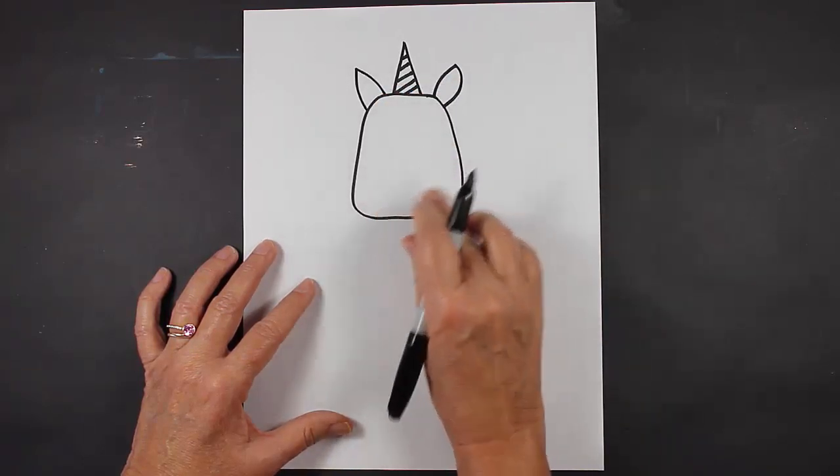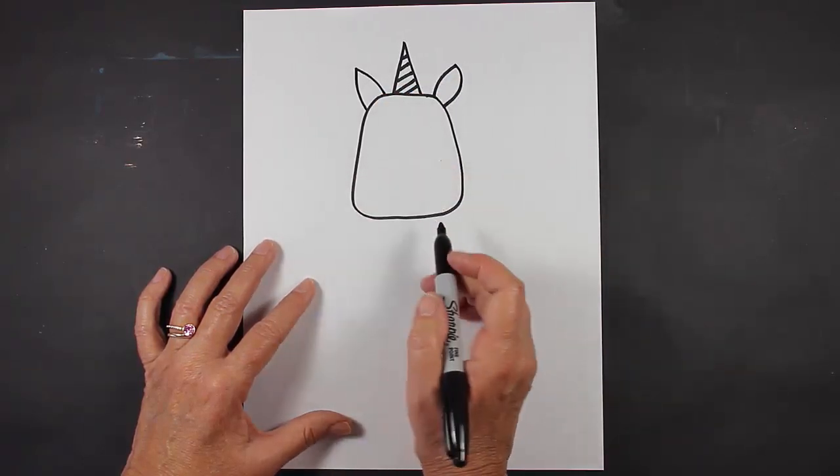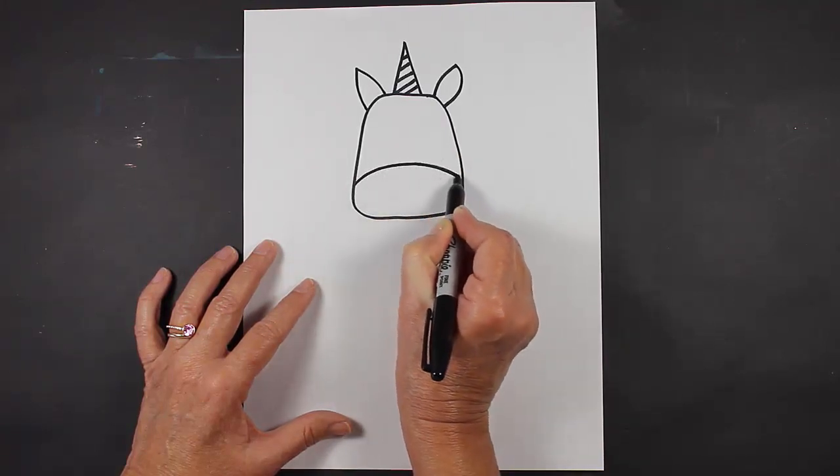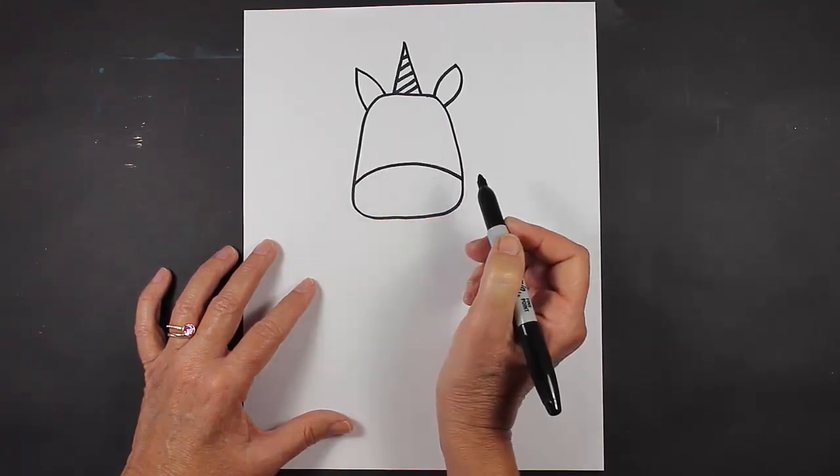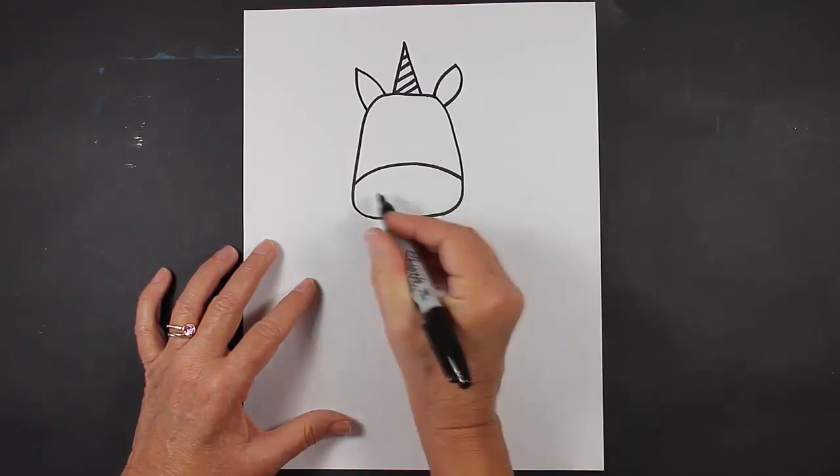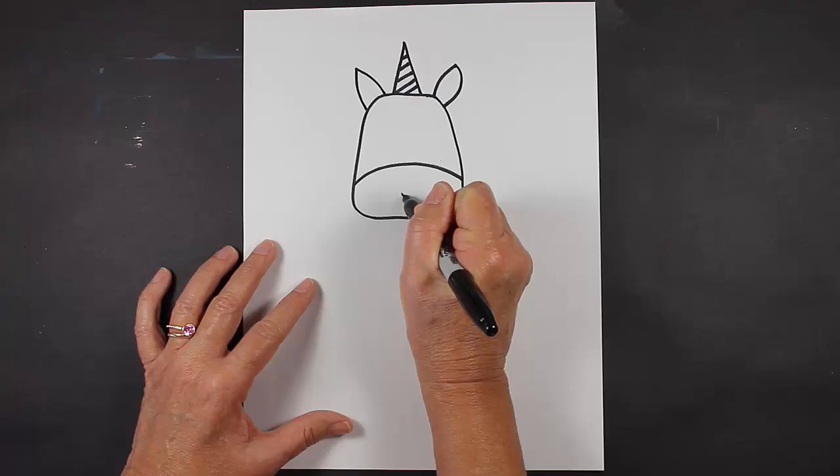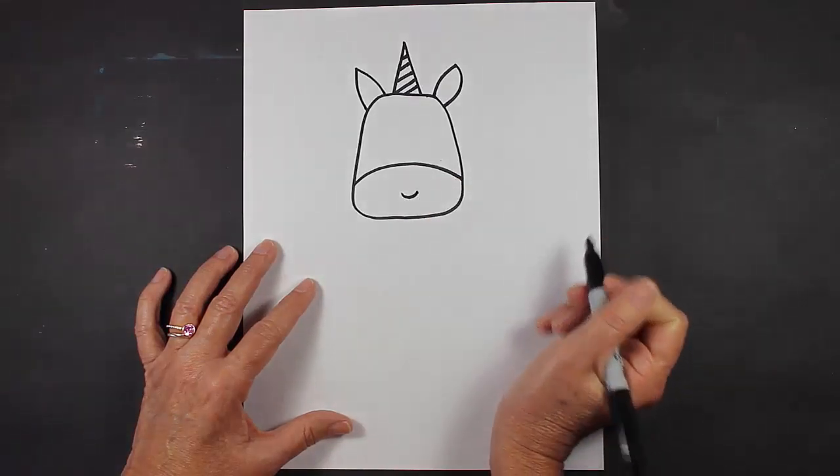Let's move down to our unicorn's face. We're going to make a curved line at the bottom that looks like this, and then inside this curved line space we're going to make a little smile.